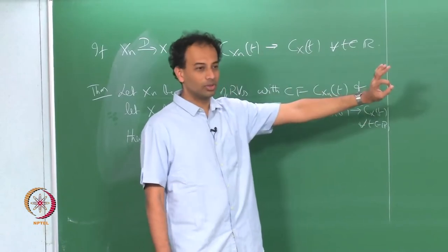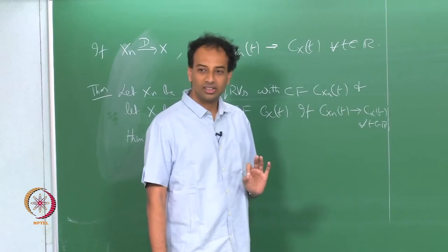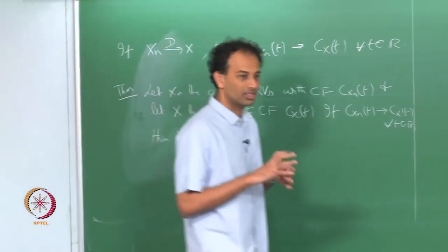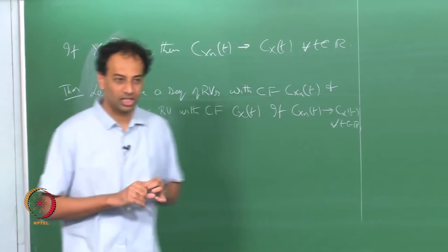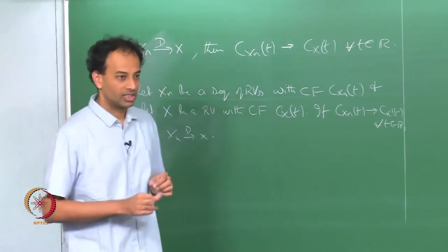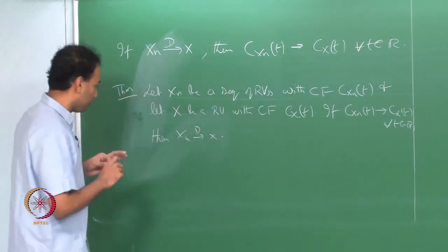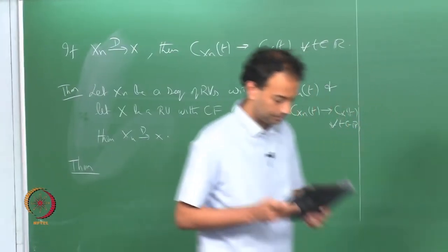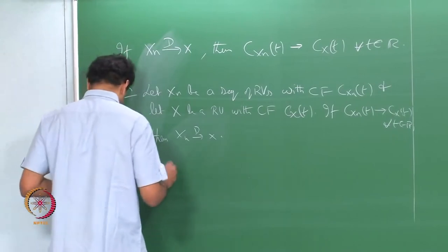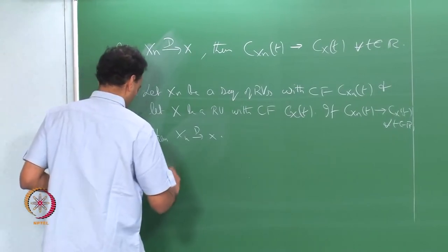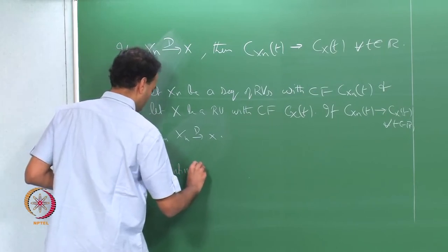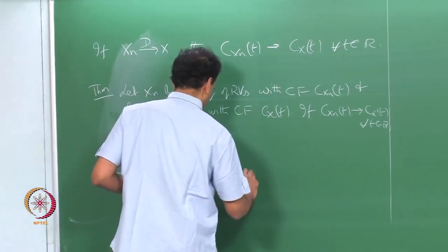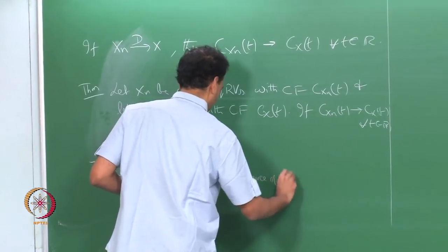If your limit function is continuous at t equal to 0, you are guaranteed convergence in distribution. This is a somewhat involved and fairly sophisticated theorem — it involves tools from harmonic analysis and complex analysis. I will state it and then explain.